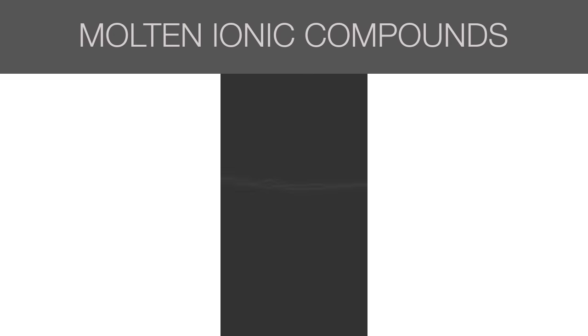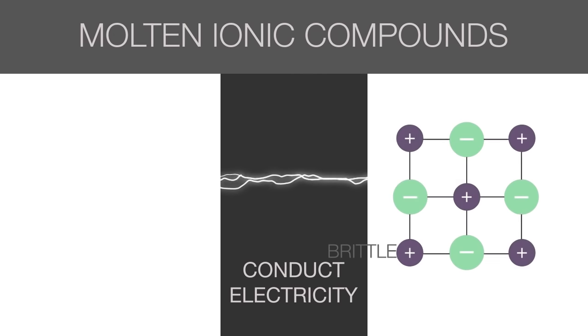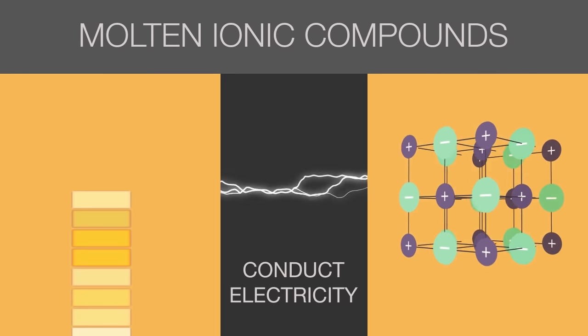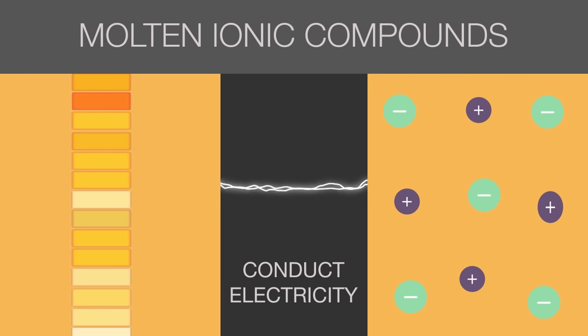Following on the same idea, molten ionic compounds can also conduct electricity. The lattice structure is broken at high temperatures. And so, the ions become free-floating.